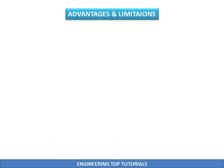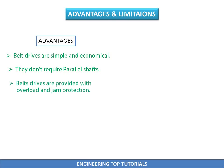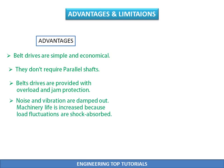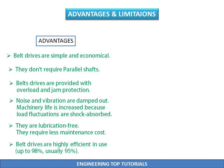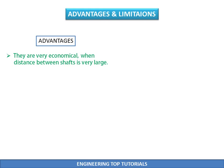Advantages of belt drives: Belt drives are simple and economical. They don't require parallel shafts, and they are provided with overload and jam protection. Noise and vibrations are damped out, increasing machinery life as load fluctuations are shock absorbed. They are lubrication free and require less maintenance cost. Belt drives are highly efficient — up to 98%, and usually up to 95%. They are very economical when the distance between shafts is very large.